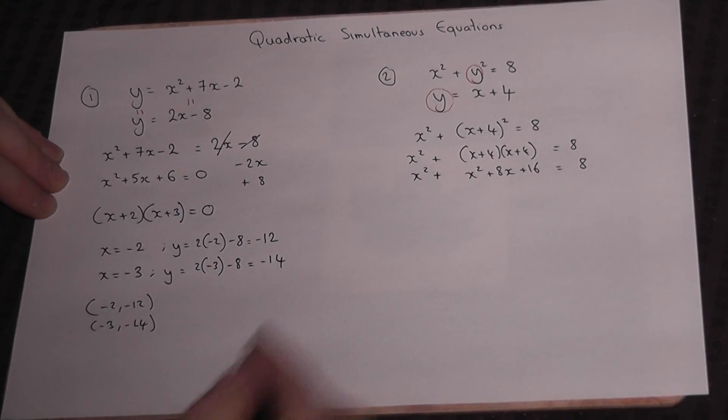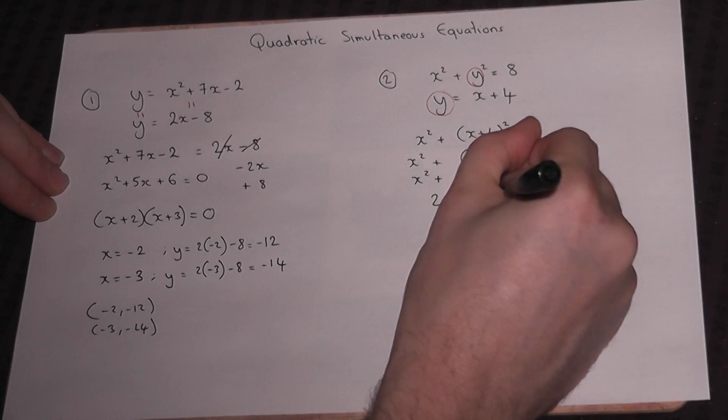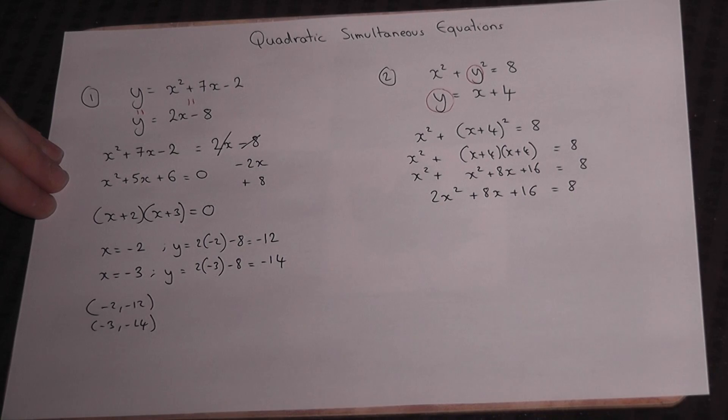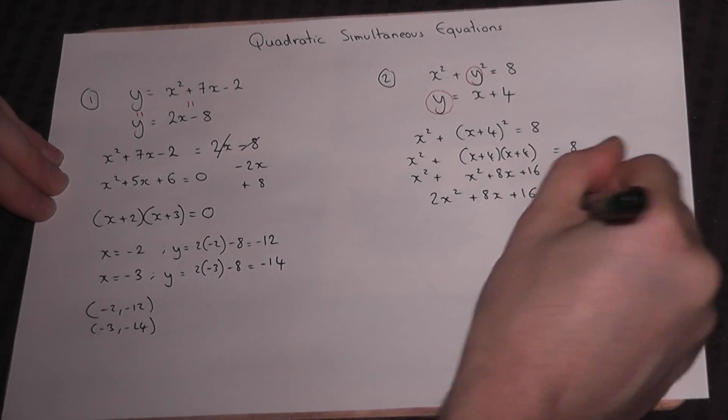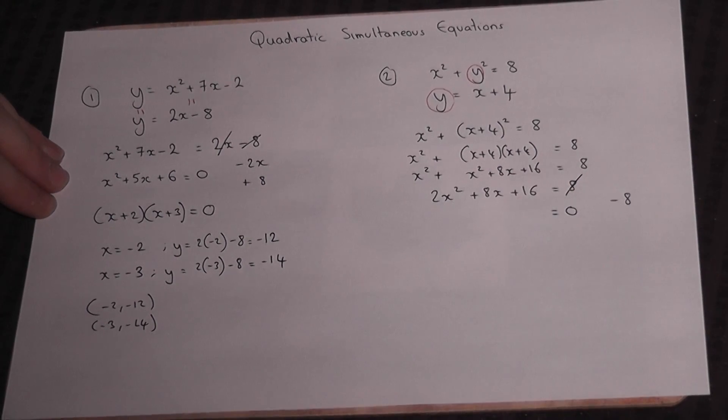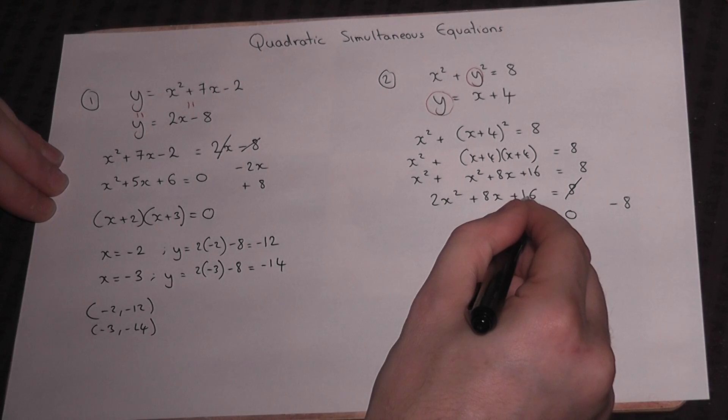We then simplify. x² + x² is 2x², plus 8x plus 16 equals 8. We now want it to equal 0, so we must take away 8. If we take away 8 there, we must do so there as well.